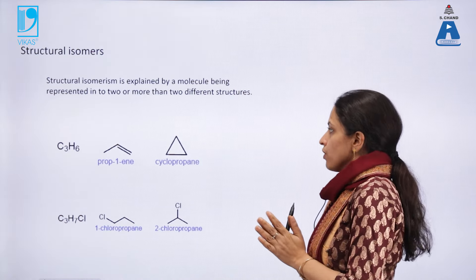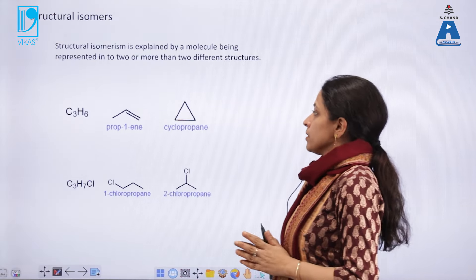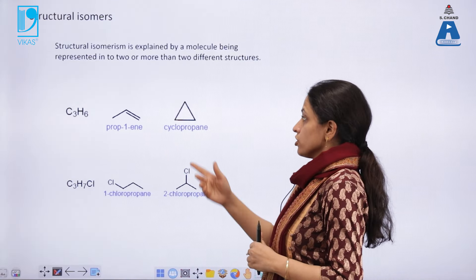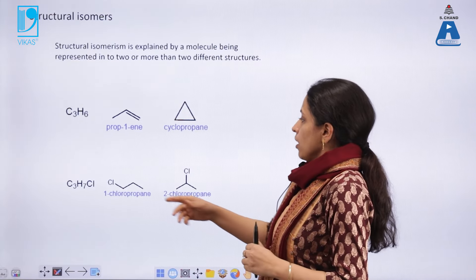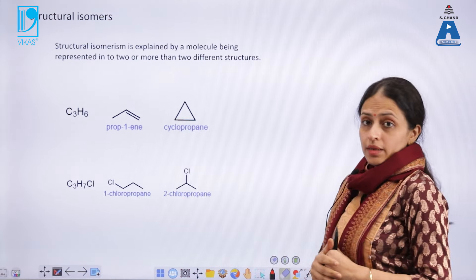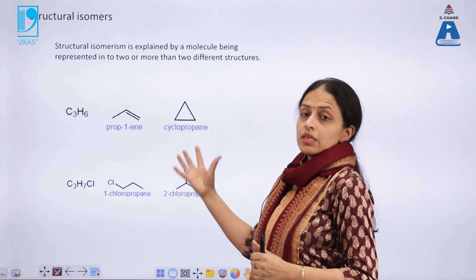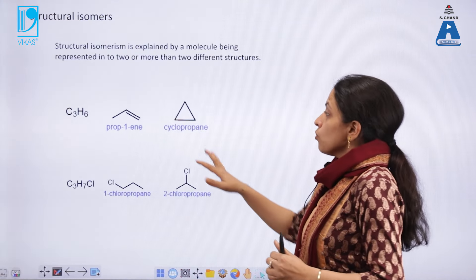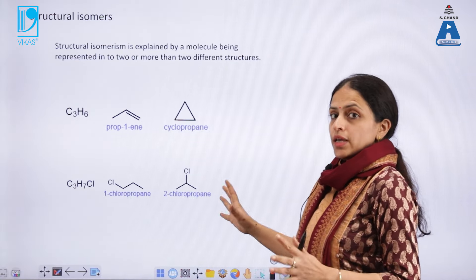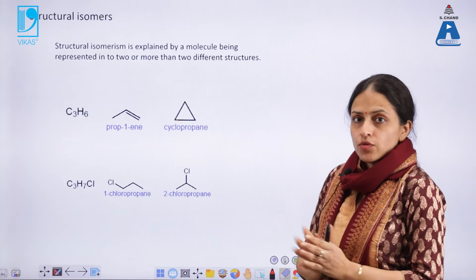For example, look at the molecule propene, C3H6. It can be represented as an aliphatic structure or as a cyclic structure, where we call it cyclopropane. Now look at chloropropane — it can be either represented as 1-chloropropane or 2-chloropropane. Both have the same molecular formula but structurally they are different, so these are broadly classified into the category of structural isomers.